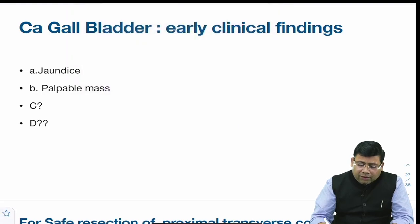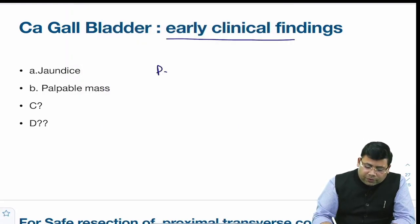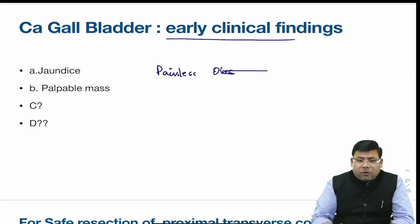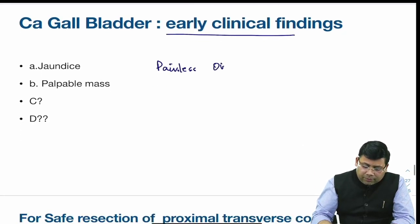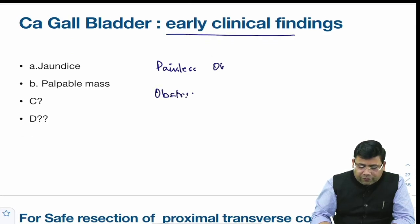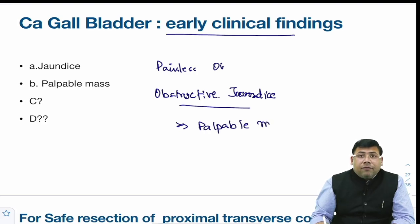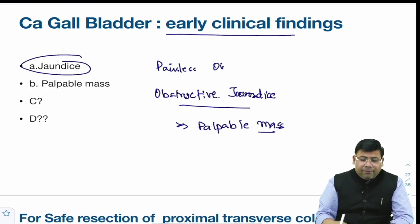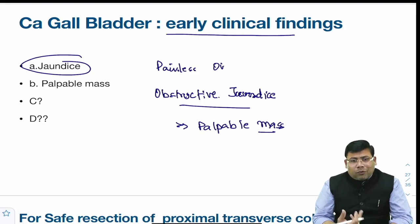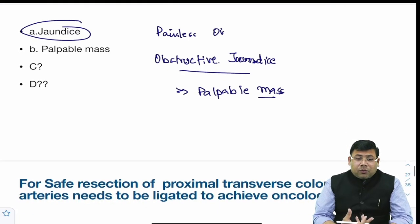There was a question on early findings in gallbladder cancer. The early finding is painless obstructive jaundice due to compression of the CBD. Along with that, there is a palpable gallbladder mass. So palpable mass with painless obstructive jaundice — jaundice is the better answer. Features of acute cholecystitis can also happen, making A the best answer.